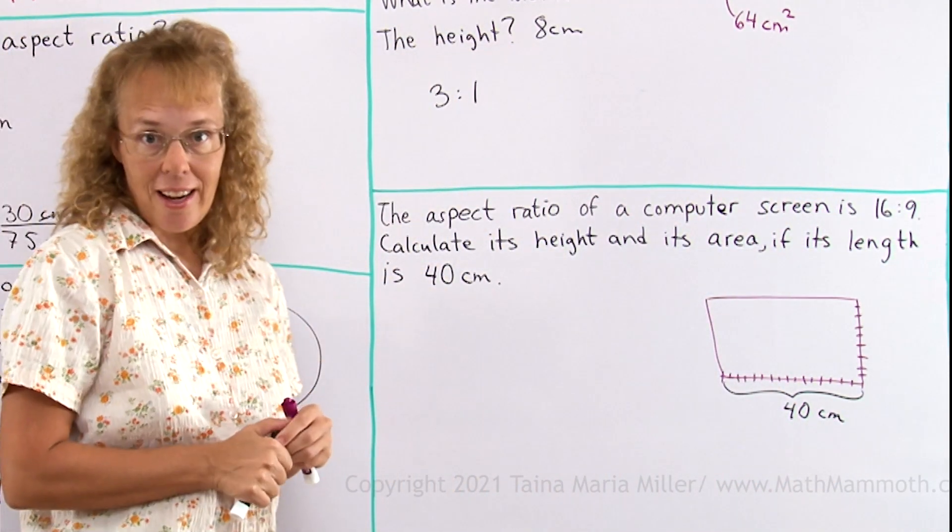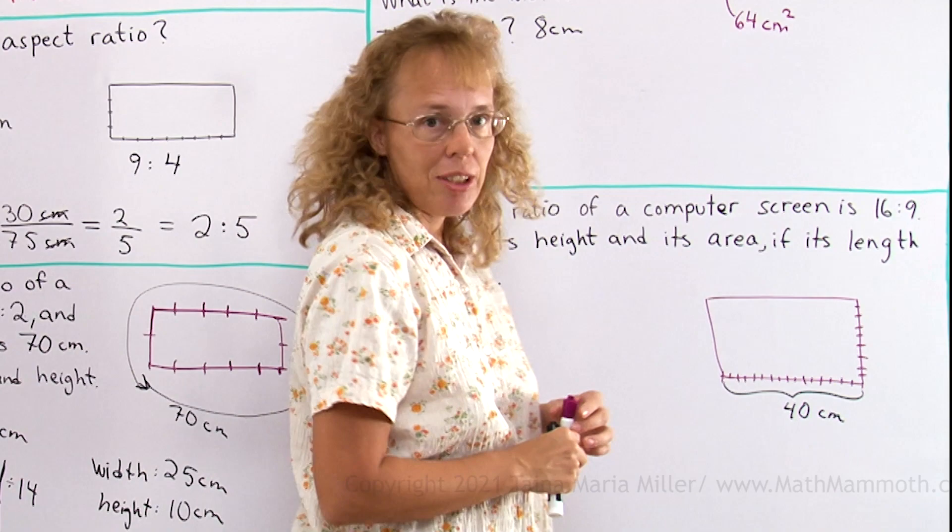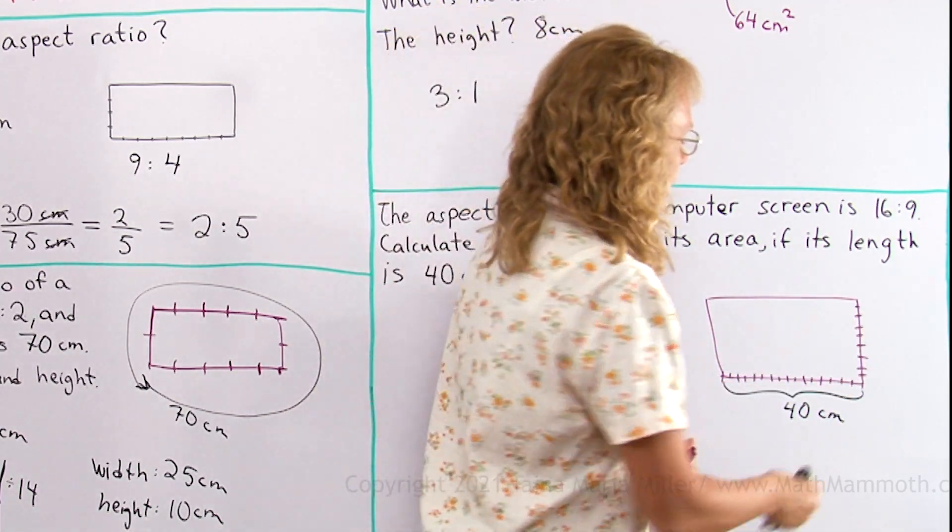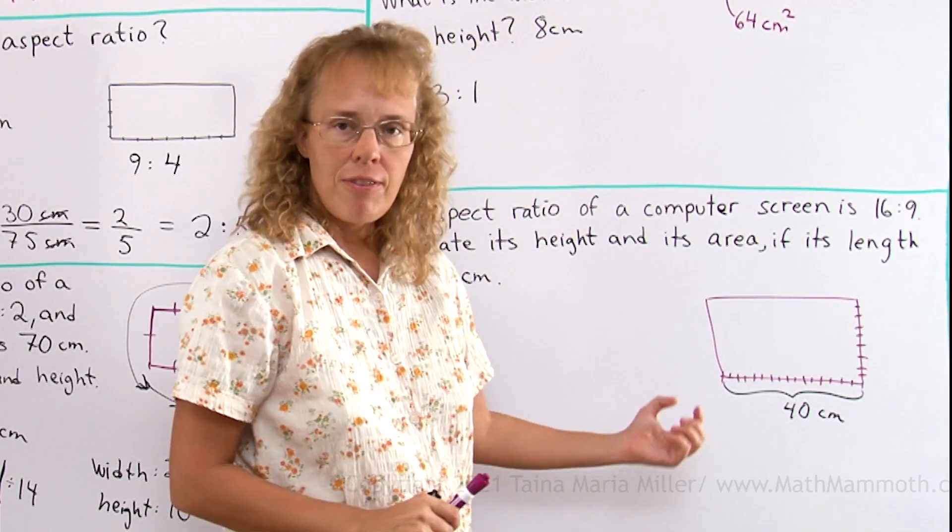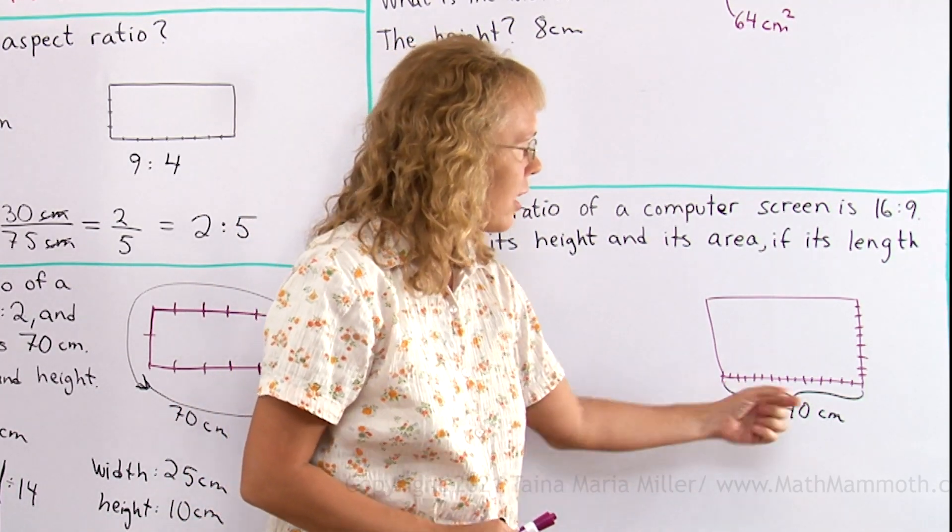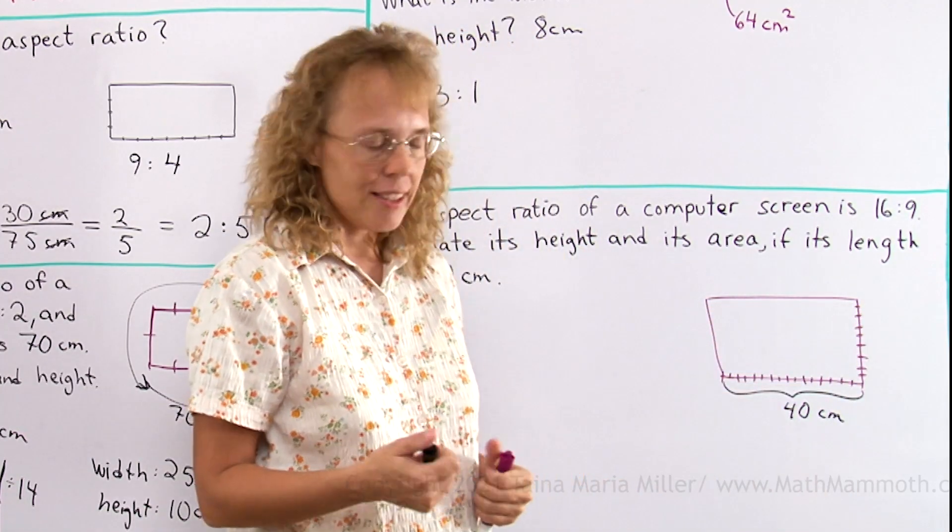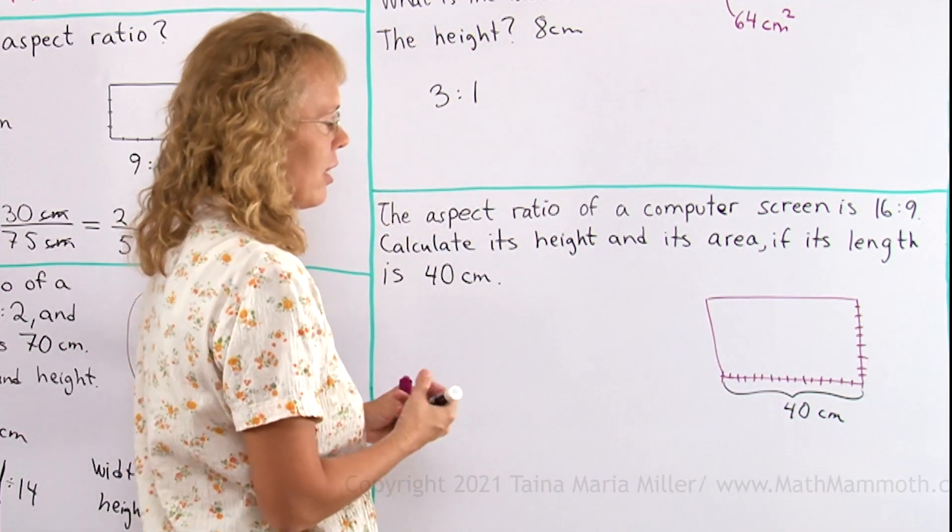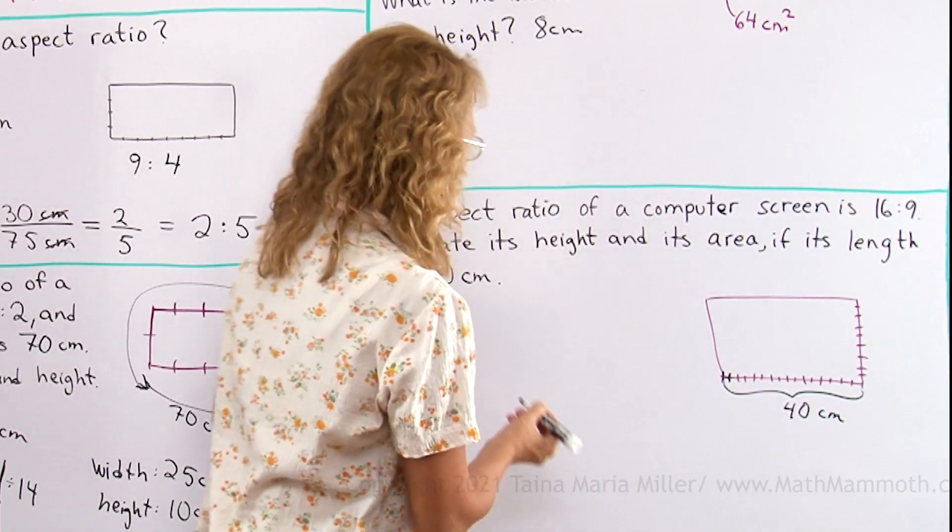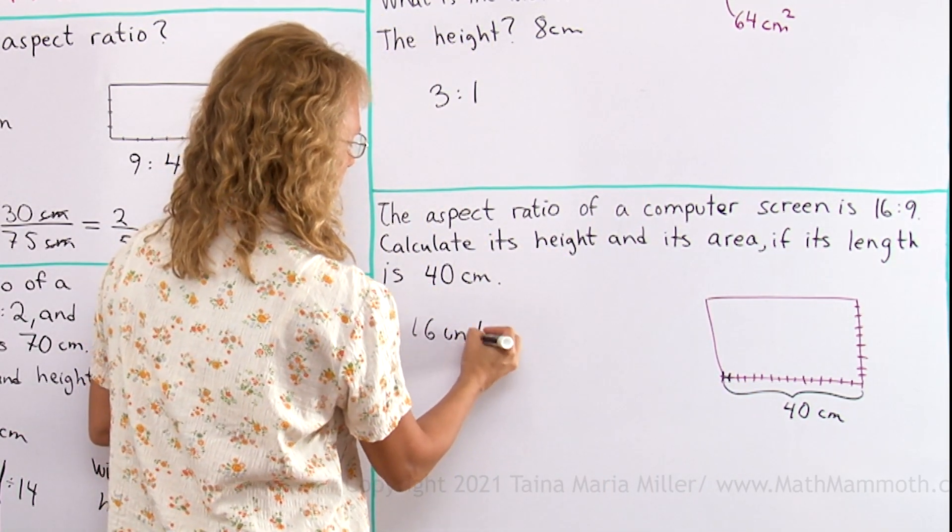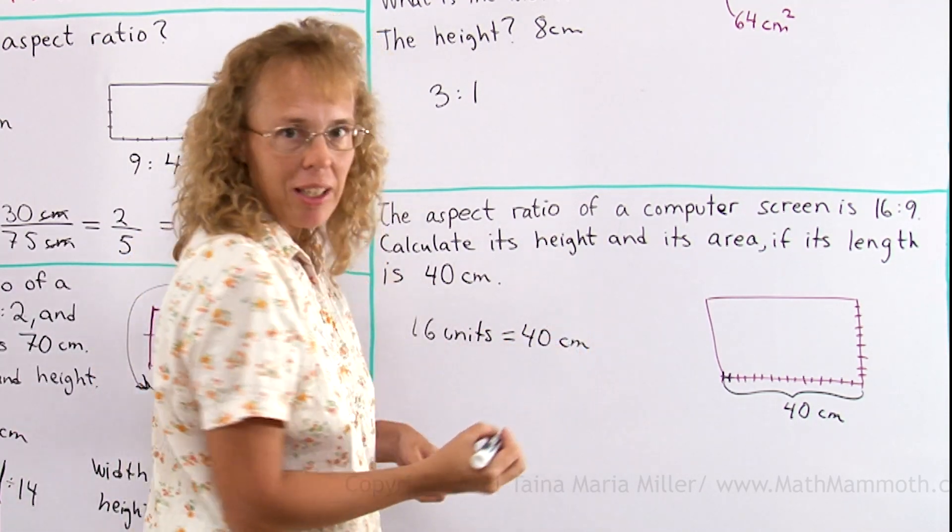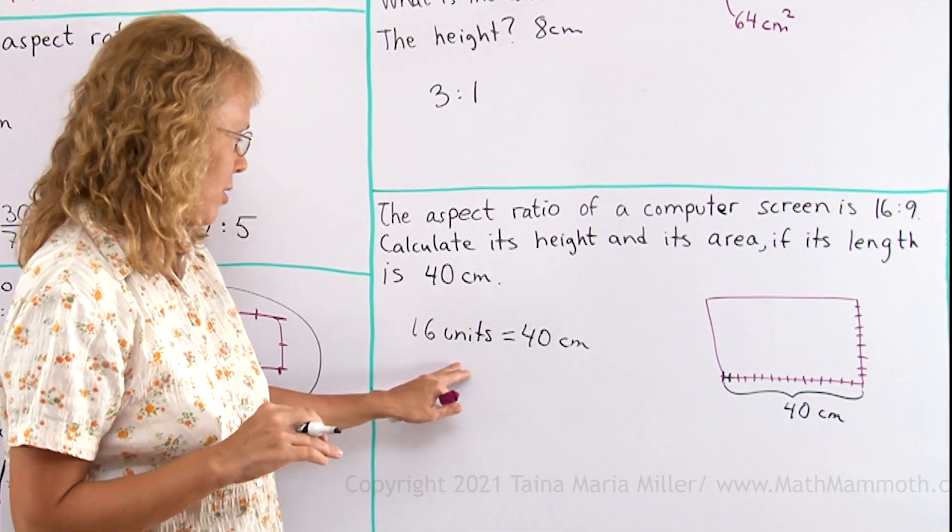And we are asked its height and the area. Now to calculate the area I need to know the height of this side. And to find the height. If I can find out how much is one of those little units, then I go there times 9 to find the height. So I need to find out how much is one of these little units here. There's 16 of them. Notice that 16 of these units is equal to 40 centimeters. Again, we get here a simple equation. Okay?